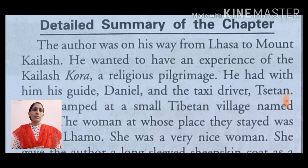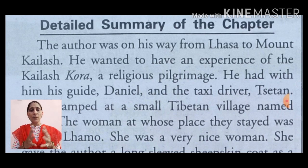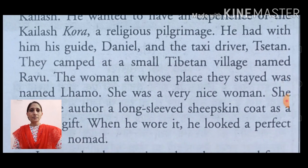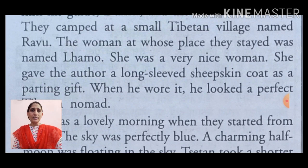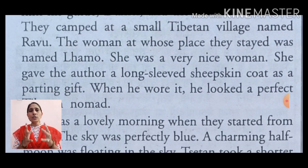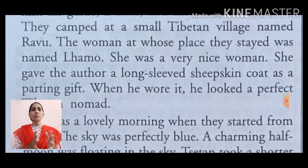He had with him his guide Daniel and a taxi driver — शैतान। उसके साथ थे उसका guide, उसका मार्गदर्शक, Daniel और एक टैक्सी चलाने वाला शैतान। They camped at a small Tibetan village named Rao — उन्होंने वहाँ camp किया, एक छोटे से Tibetan गाँव में जिसका नाम Rao था।